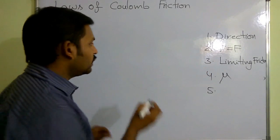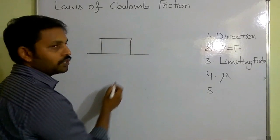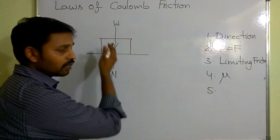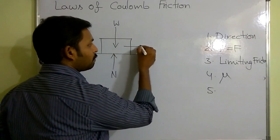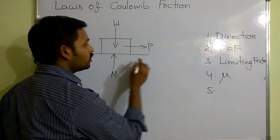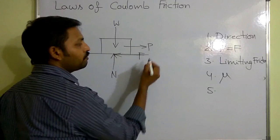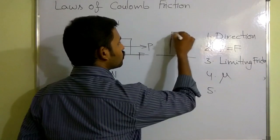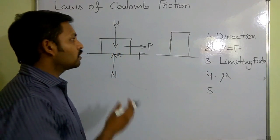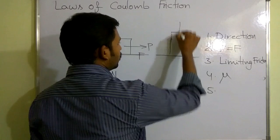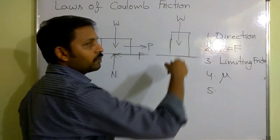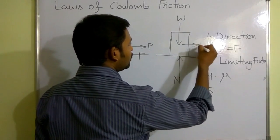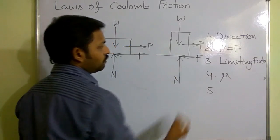Here I am considering a block of weight W in the horizontal position. The weight of the block is W, and the normal reaction perpendicular to the surface is N. If I apply force P in this direction, then the block will have a tendency to move in this direction, and in the opposite direction there will be frictional force. Now I am considering the same block in the vertical position. When I consider the same block vertically, the weight doesn't change — W still acts vertically downwards. Normal reaction is perpendicular to the surface, and with applied force P in this direction, we get frictional force F.